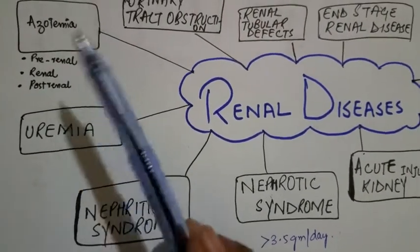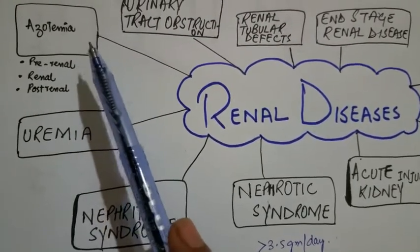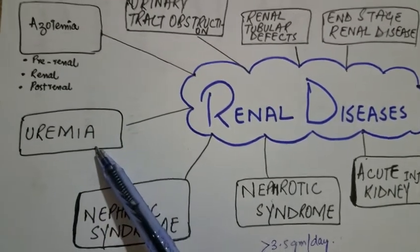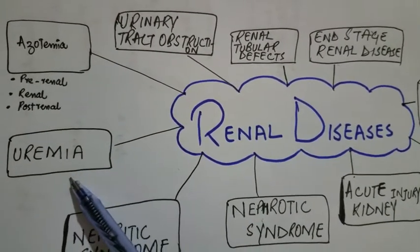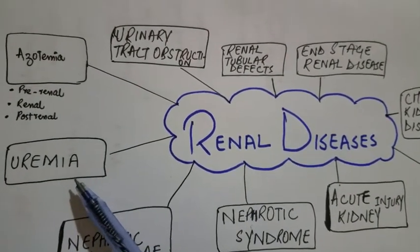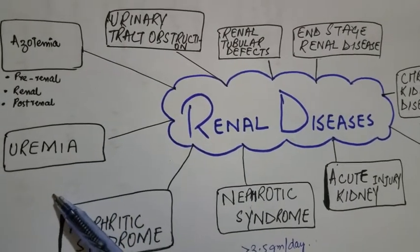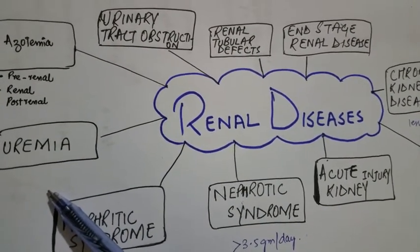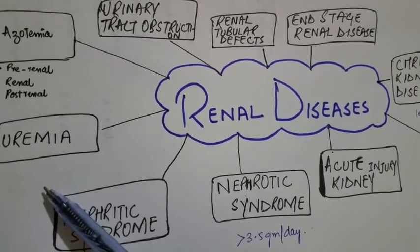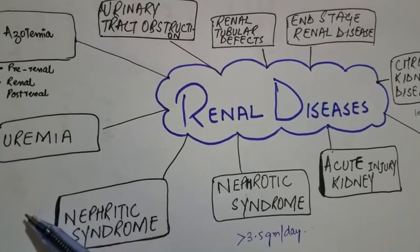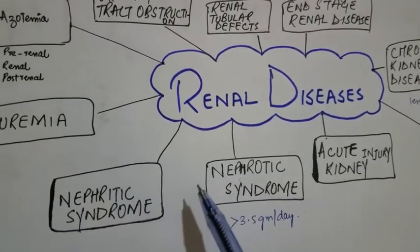Uremia is basically azotemia, but when azotemia is present with clinical signs and symptoms, it is known as uremia. Uremia presents with a number of endocrine and metabolic disorders resulting from renal damage — for example, uremic gastroenteritis, peripheral neuropathy, and fibrinous pericarditis.